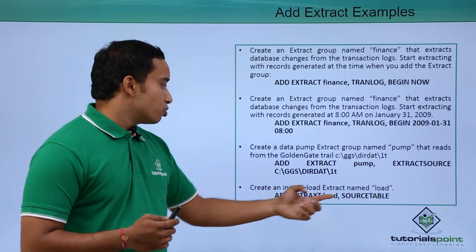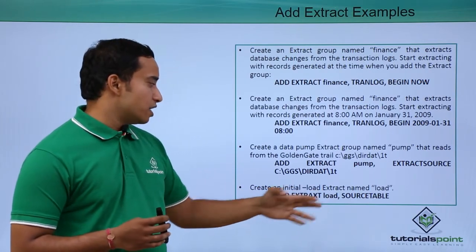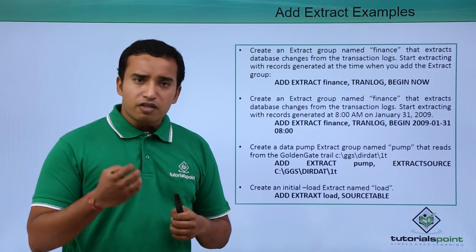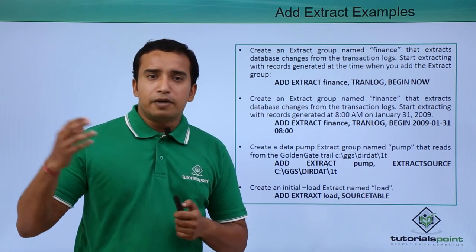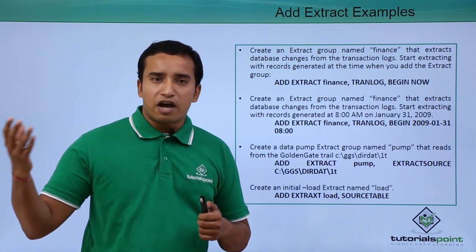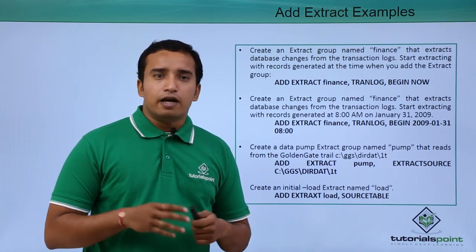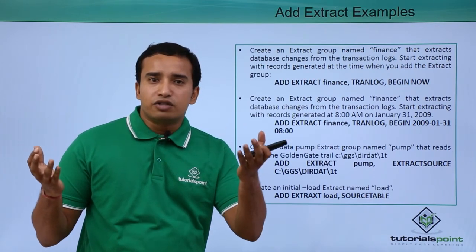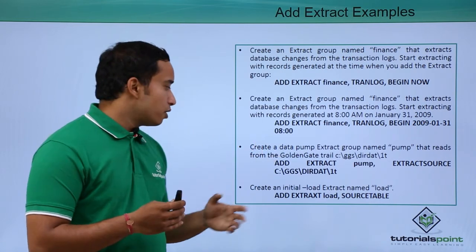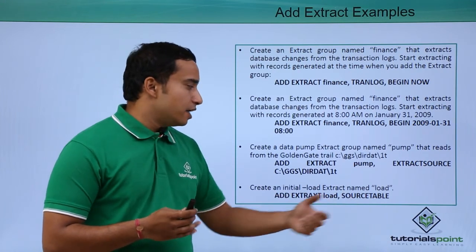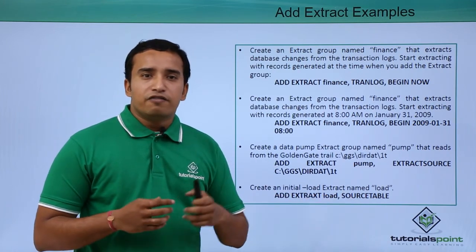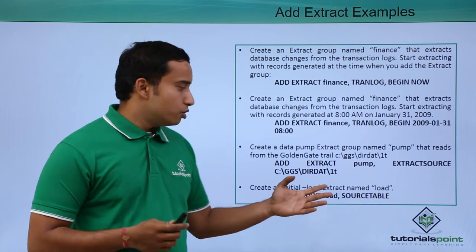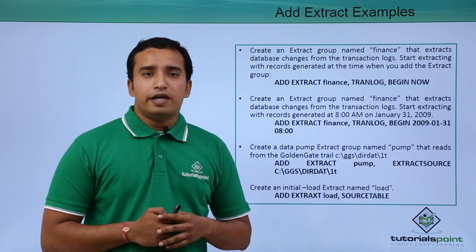Finally, you can also create a temporary extract for initial load using 'add extract <extract_name> sourceistable'. This means your extract process will fetch the data directly from the source tables and replicate it to the target database. For example, if your target database has no data and you want to perform an initial load — to get your target database in sync with your source database — you use this command. It fetches data directly from the source tables and puts it into the target database.